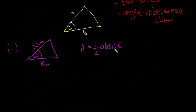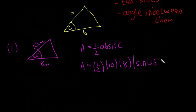So area of the triangle is half A, B, sine C. So the area of this triangle is going to be equal to half multiplied by 10 multiplied by 8 multiplied by sine of 45. That's the angle in between them. I'll just change color for the answer.